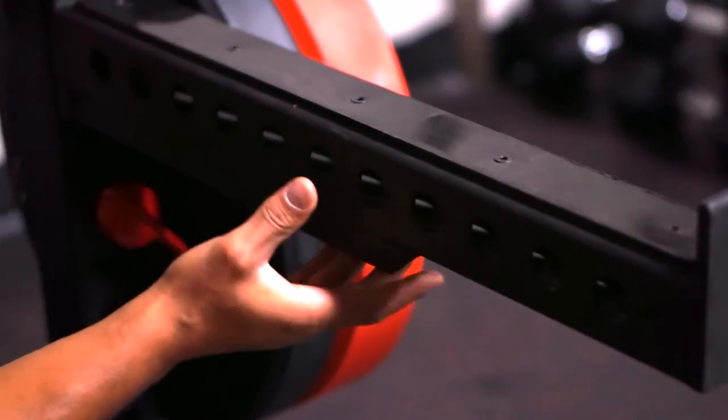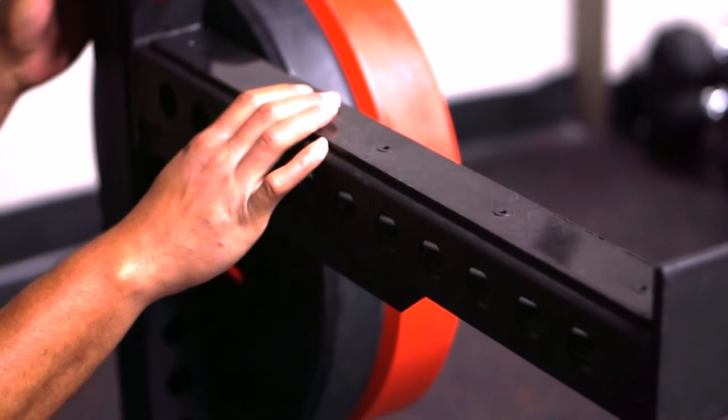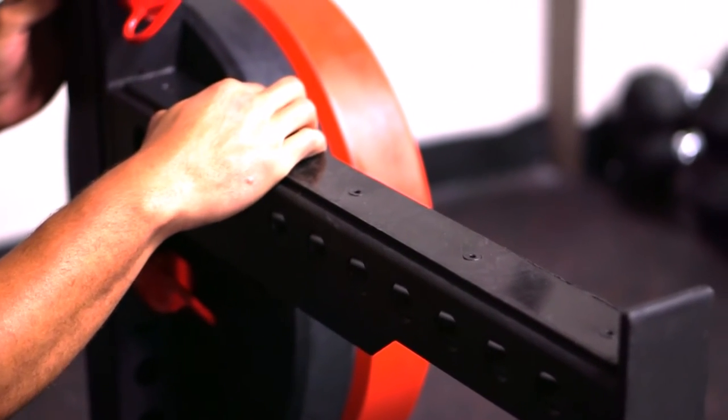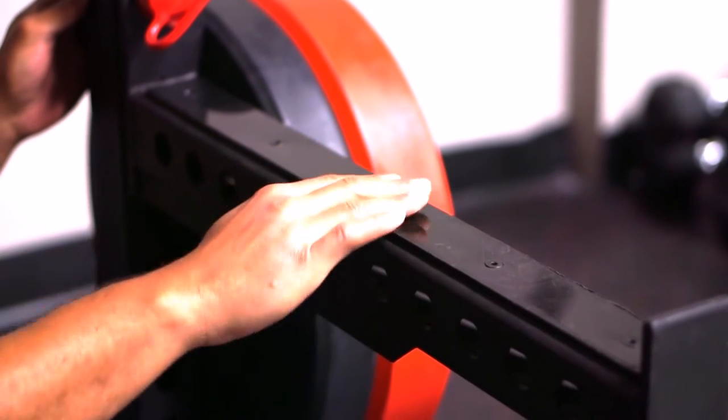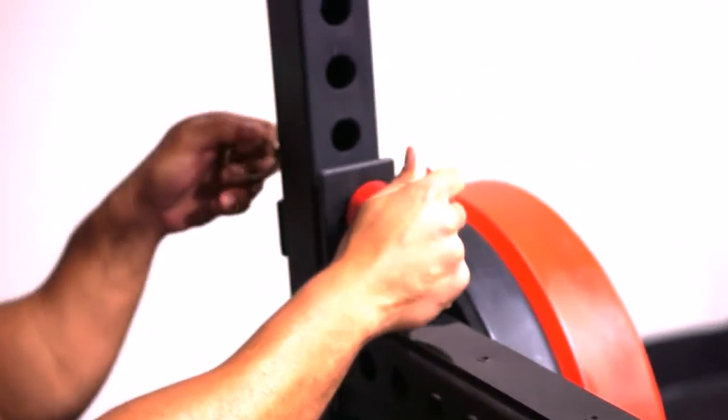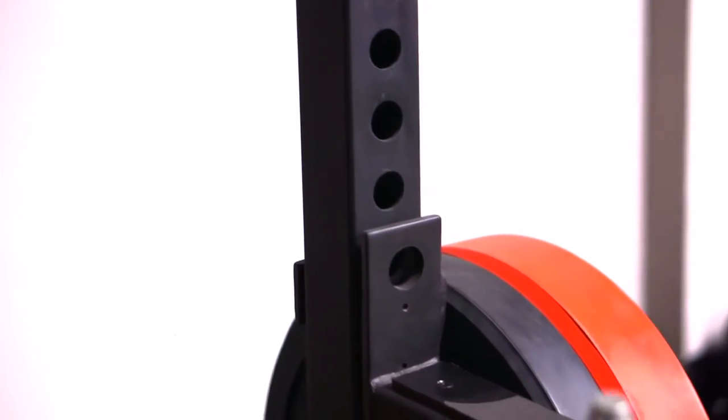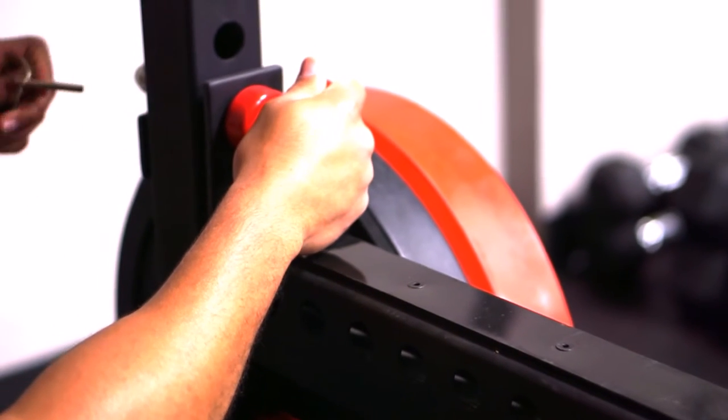Let's talk about the safety spotters. I believe these are about 26 inches long. Same heavy gauge thickness UHMW coated piece here to prevent wear to the barbell. Got these nice safety pins. These are also 1 inch. So it's really heavy duty stuff here.